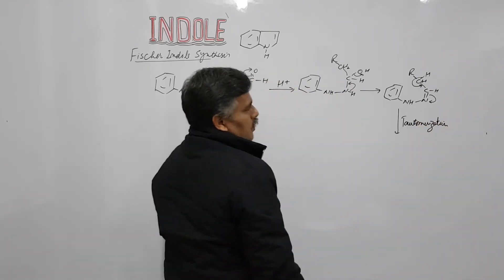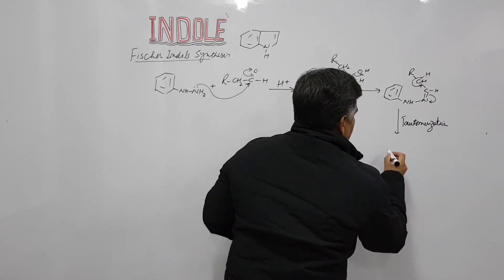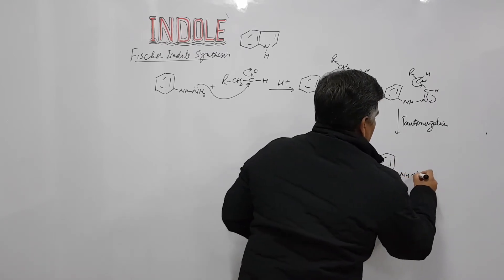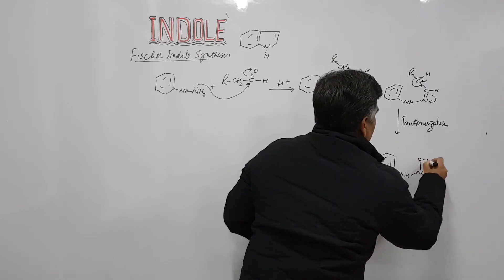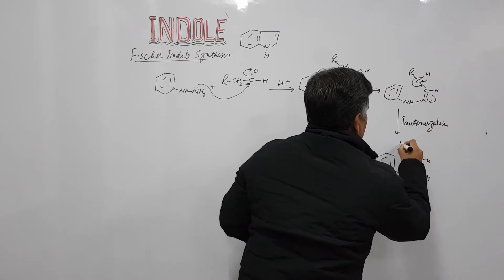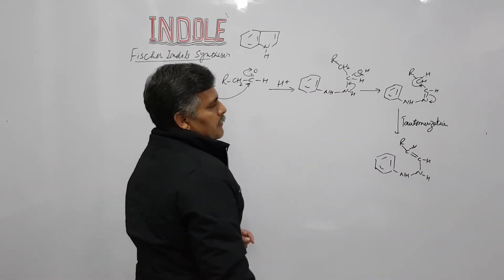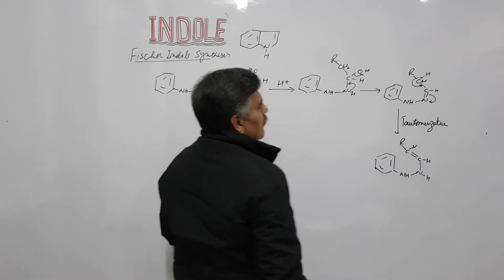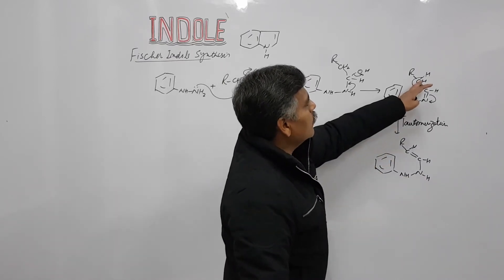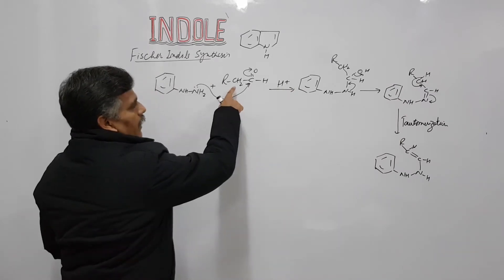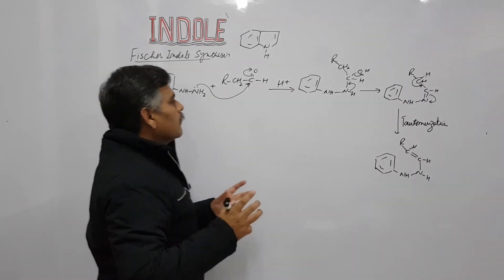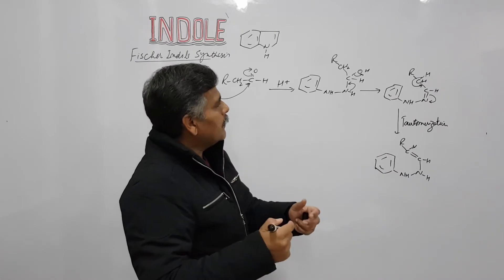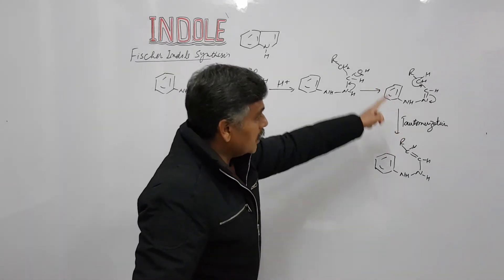Tautomerization gives us Ph-NH-NH with a single bond to carbon and CHR — you can call this the imine-hydrazine tautomer. Here a hydrogen is necessary, which is why the starting carbonyl compounds must possess at least one alpha hydrogen. These help in the enolization of the hydrazone in later steps.